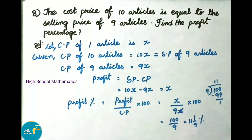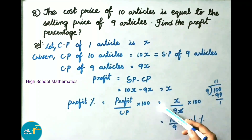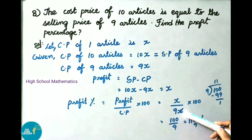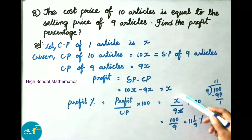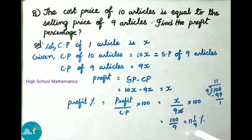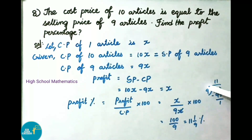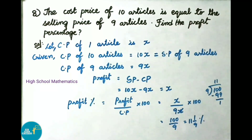Profit percentage equals profit by cost price into 100, that is X by 9X into 100. X cancels, leaving 100 by 9. Dividing: 9 times 11 is 99, remainder 1. So the answer is 11 and 1/9 percent. Therefore profit percentage is 11 and 1/9 percent.